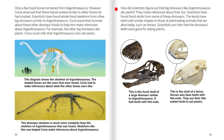How did scientists figure out that big dinosaurs like Argentinosaurus ate plants? They made inferences about that too. Scientists have found fossil skulls from some of these dinosaurs. The skulls have teeth with similar shapes to those of plant-eating animals alive today, such as horses. Scientists can infer that the dinosaur's teeth were good for eating plants. This is the fossil skull of a large dinosaur similar to Argentinosaurus — it had teeth with flat ends. This is the skull of a horse; horses also have teeth with flat ends.